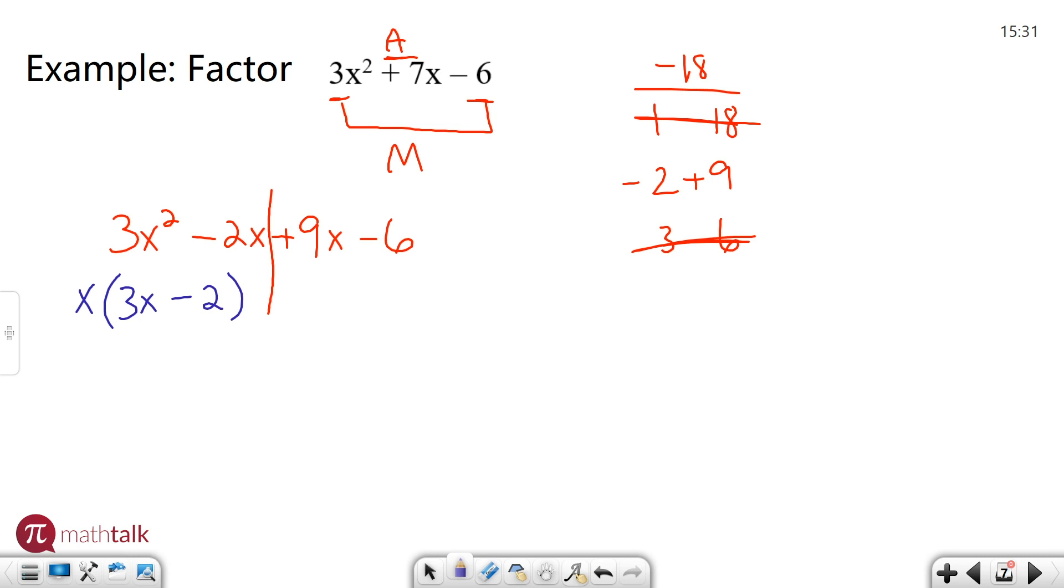Okay, now I need to find something that goes into or divides into both 9x and negative six. Well, negative six is just a number, so I can only use a number. And the number they have in common is a three. I'm going to use a positive three here because it's going to work out a lot better.